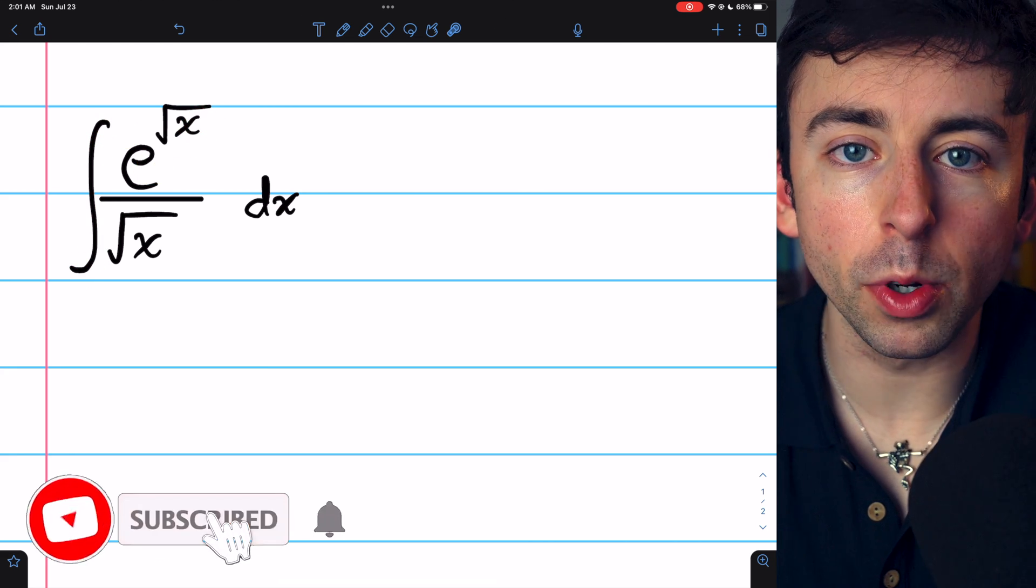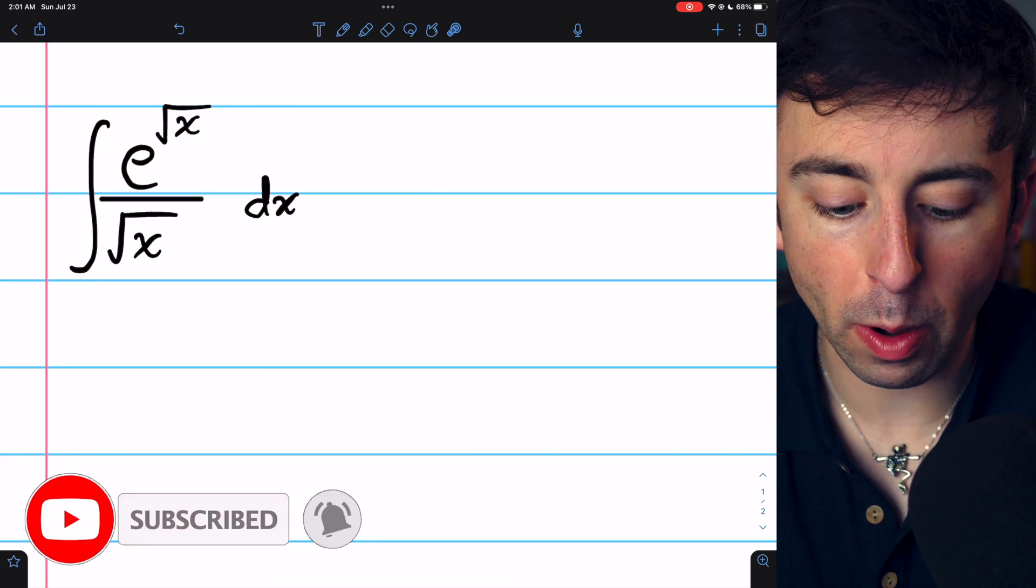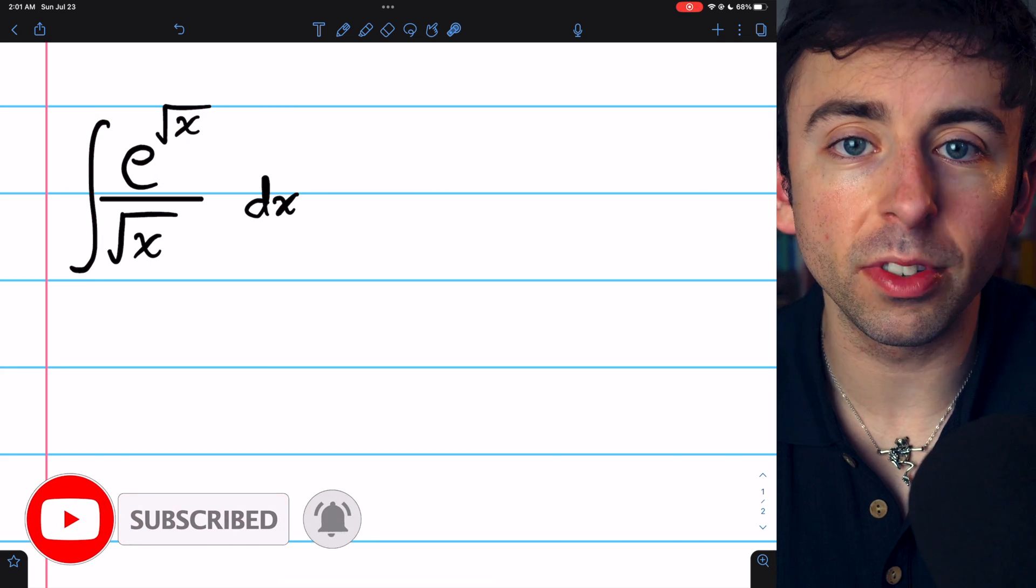The integral of e to the square root of x divided by the square root of x is a cute u-substitution problem.